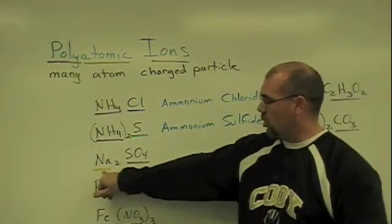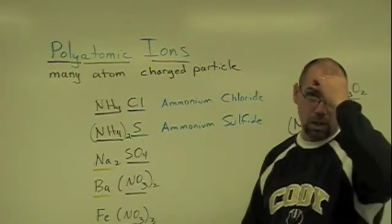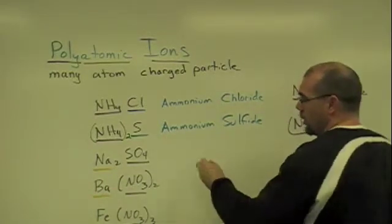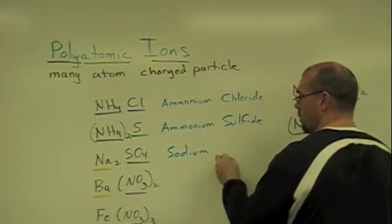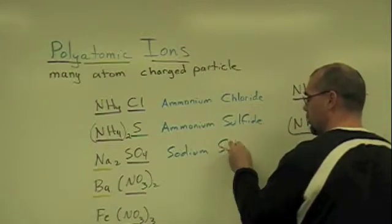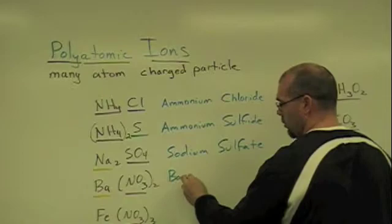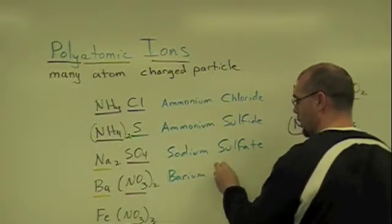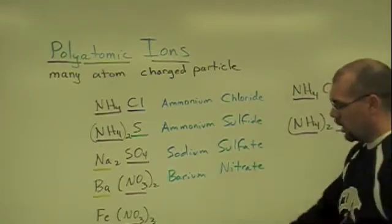Now we get to the golds. If you're from column one, or column two, or aluminum, you don't need a roman numeral. So we're looking at sodium. And then write the other guy's name. Sulfate. Here I've got barium. Write the other guy's name. Nitrate.